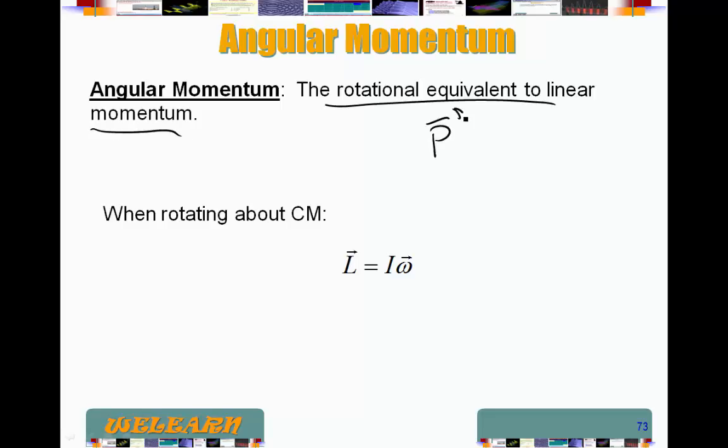Remember we define momentum as mass times velocity. Rotational momentum or angular momentum, instead of P we use L. Instead of M, remember the equivalent of mass for rotational motion is moment of inertia or rotational inertia I.